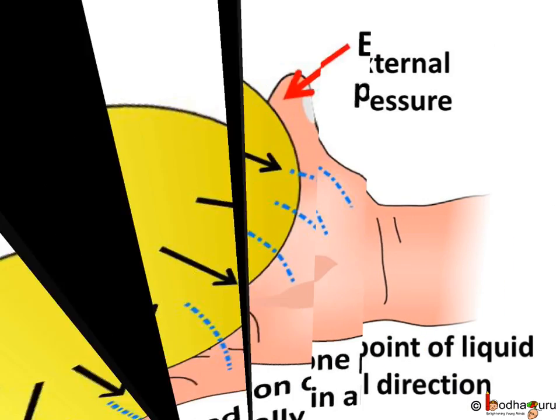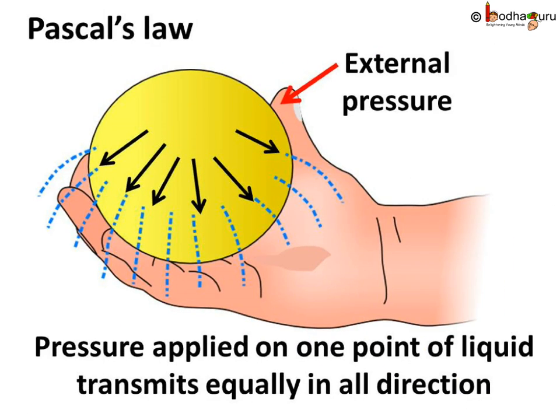The scientist Pascal said if we apply pressure at any point of a confined fluid, it will be transmitted without any change to every other point in the liquid. Which means the pressure will be transmitted equally in all directions. So the pressure we applied is transmitted equally in all directions.